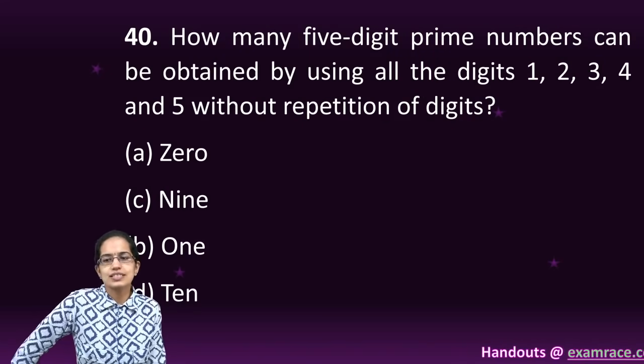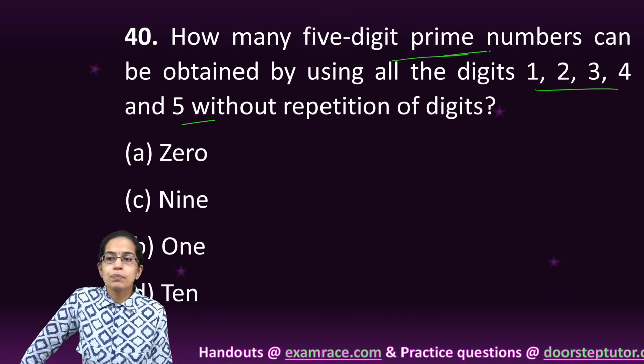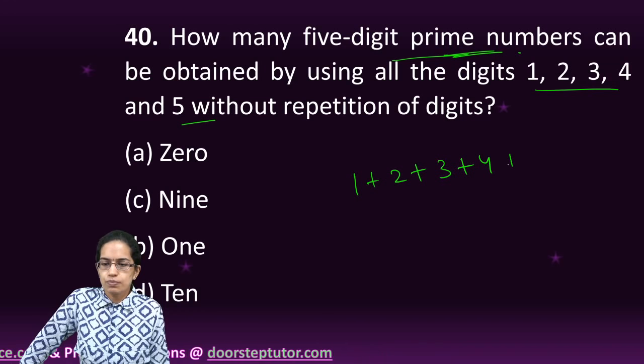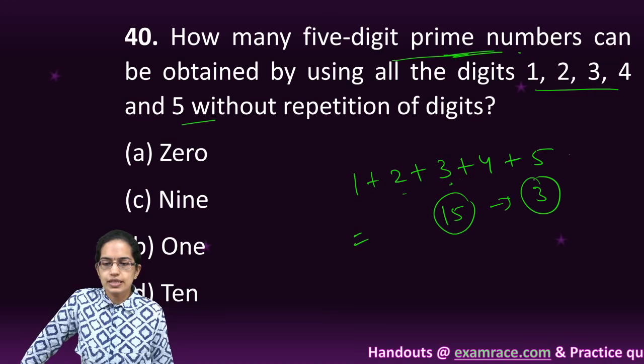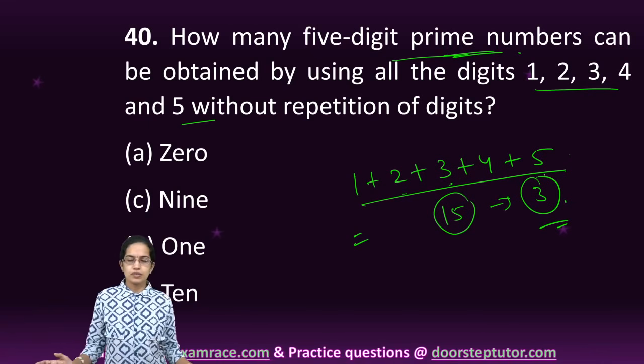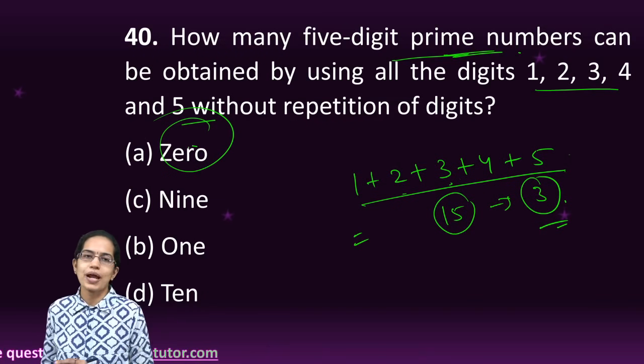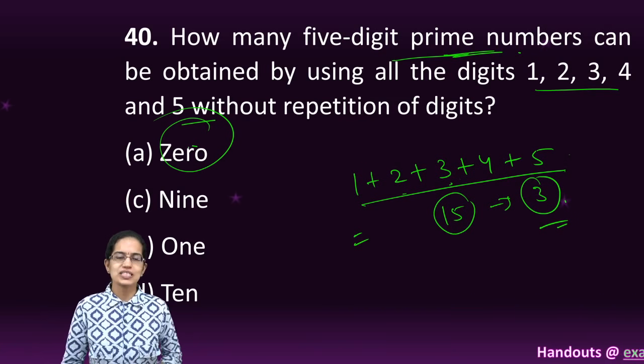The last question in this series is further interesting. You have 5 digits. You have to create a 5 digit prime number without repetition. So what I do is I add 1 plus 2 plus 3 plus 4 plus 5. It gives me 15 and 15 is divisible by 3. That means the sum of these numbers, since they are always divisible by 3, I cannot create a prime number. So there can be 0 prime numbers.